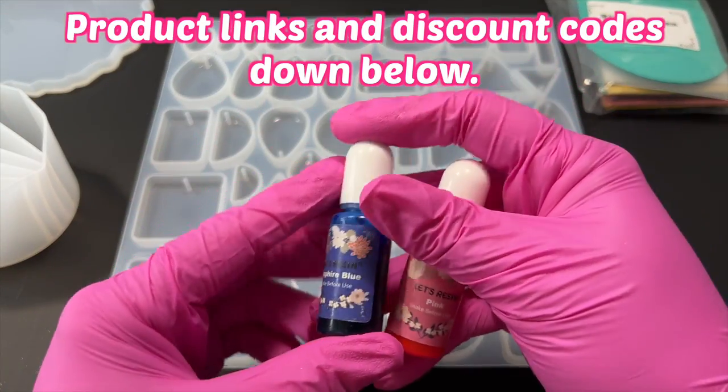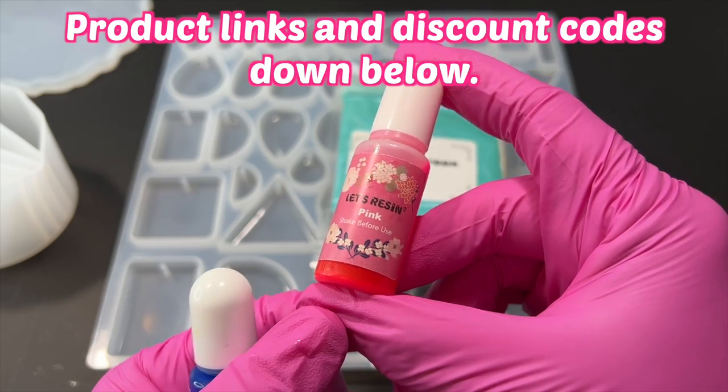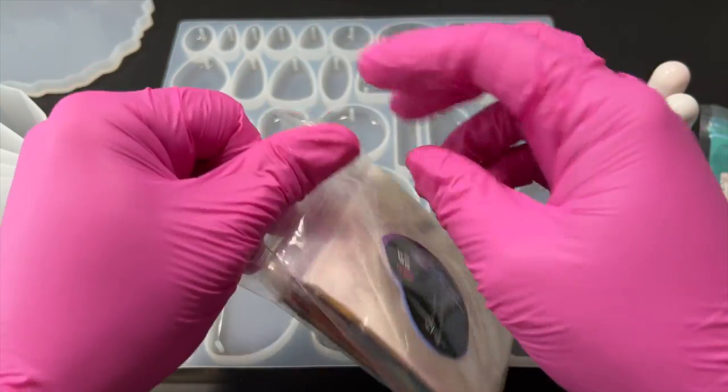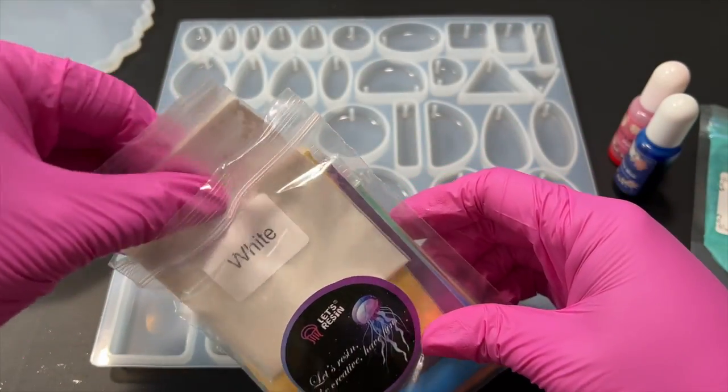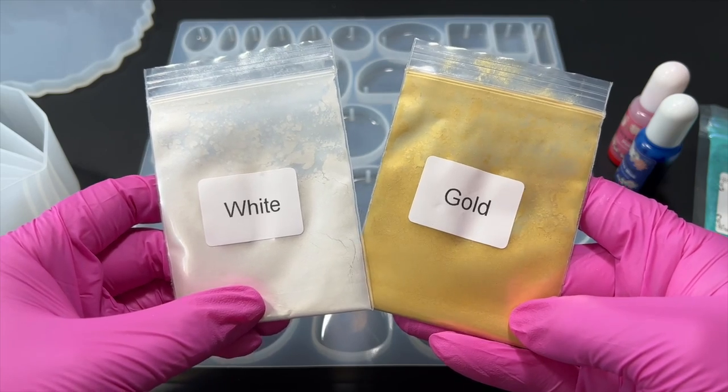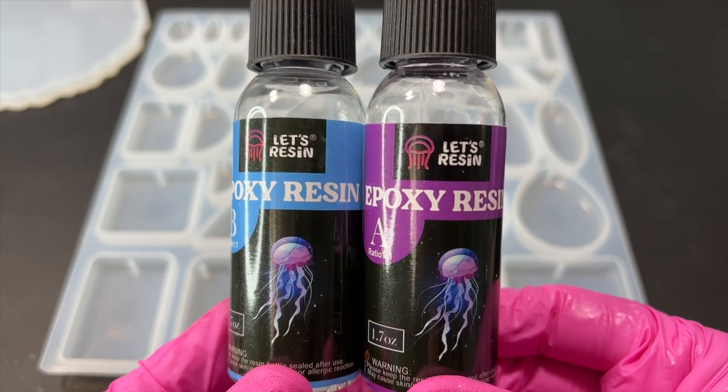I've gone ahead and also chosen my colors. This time I'll be using this vibrant pink, sapphire blue, bluish teal, and as for my last two colors I'm going to be using white and gold from the Let's Resin set I used in my other video. Before I forget, the epoxy resin I'll be using is from Let's Resin since it worked really well the last time.